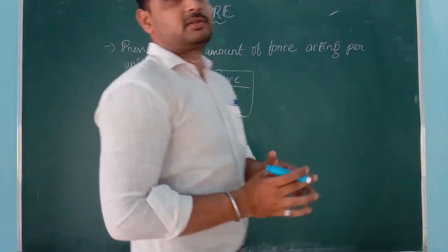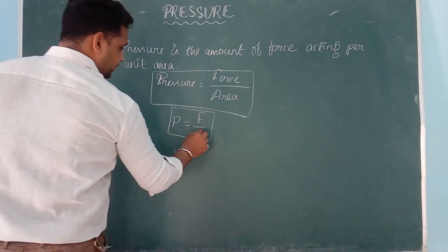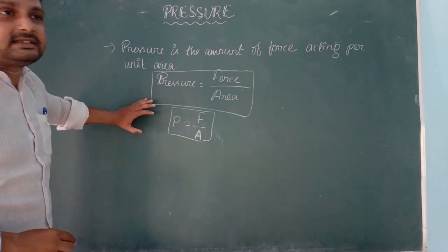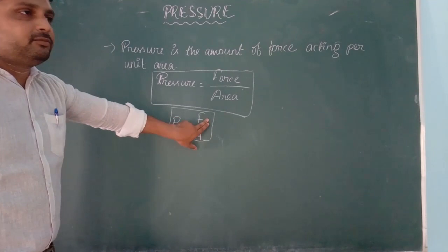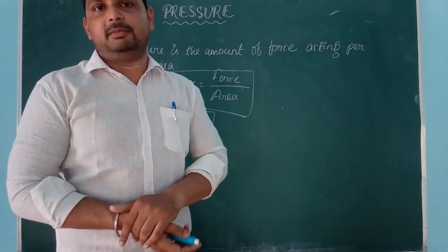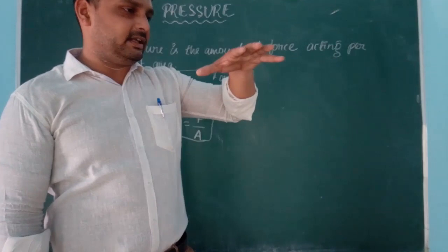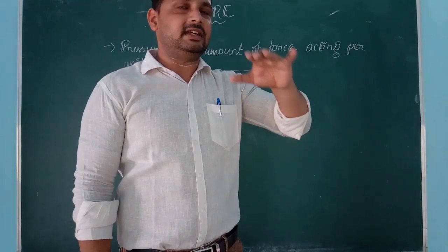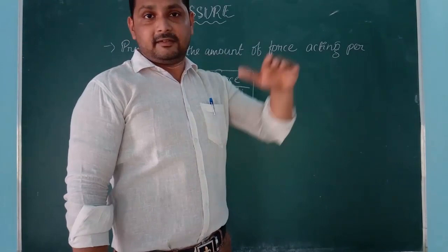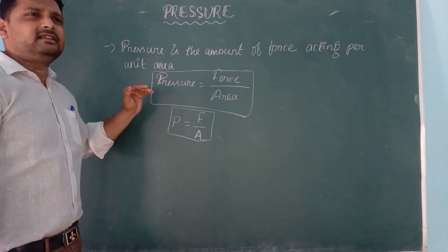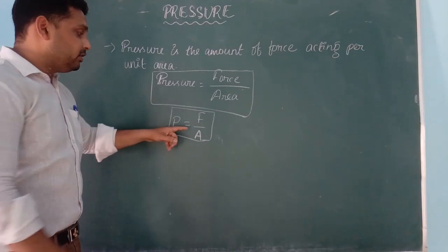If you keep the area constant — meaning the area of contact between two surfaces — then more force leads to more pressure. For example, in a pile of sand, if your parents stand on it instead of you, they will sink more because the force is more, so the pressure is more. More force means more pressure, and less force means less pressure when area is constant.